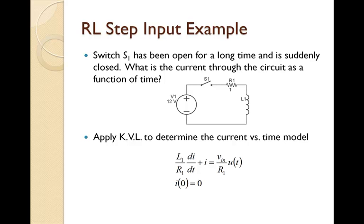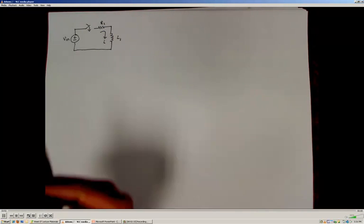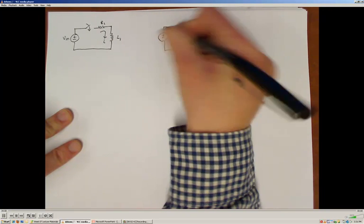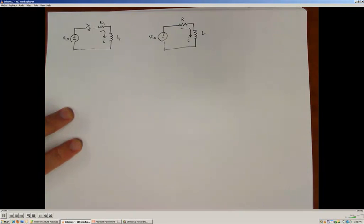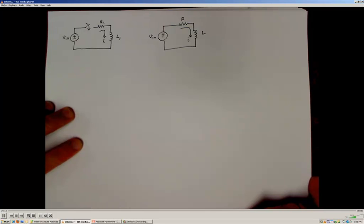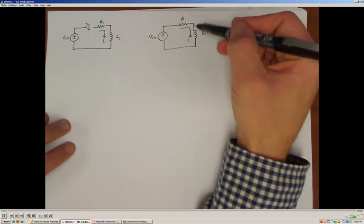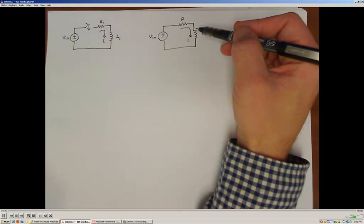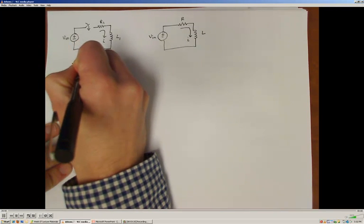To establish the differential equation model, we look at the circuit after the switch closes at time equals zero. We're solving for current rather than voltage, which is a departure from many previous examples. The general rule of thumb is: if solving for current, use the mesh current method; if solving for voltage, use the node voltage method. So here we'll apply Kirchhoff's voltage law around the loop.